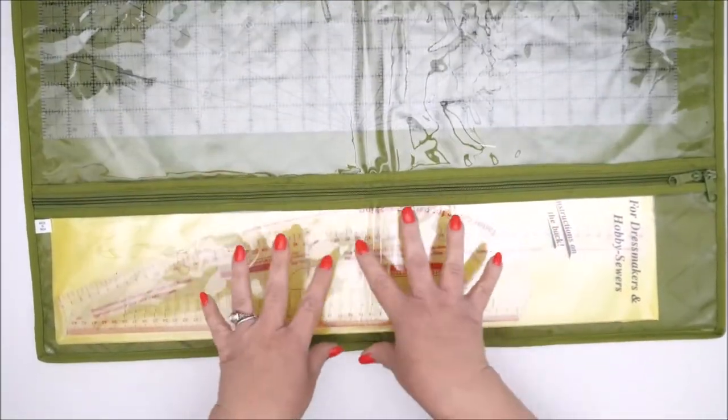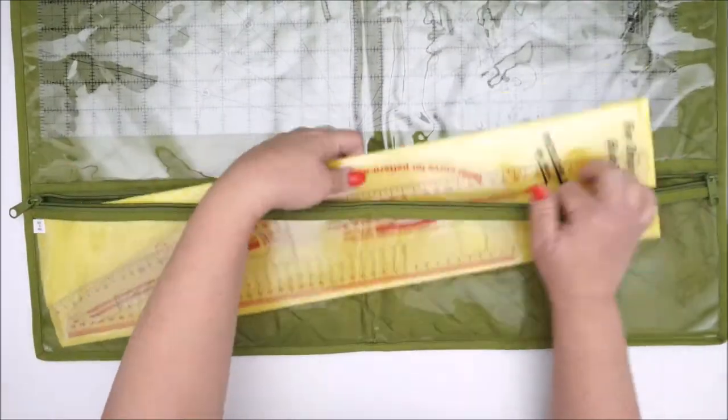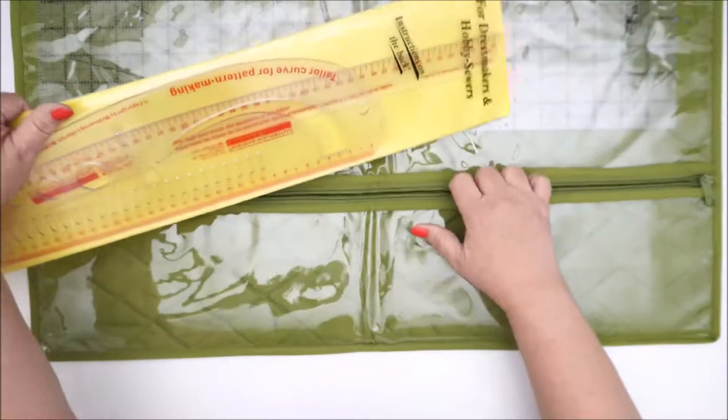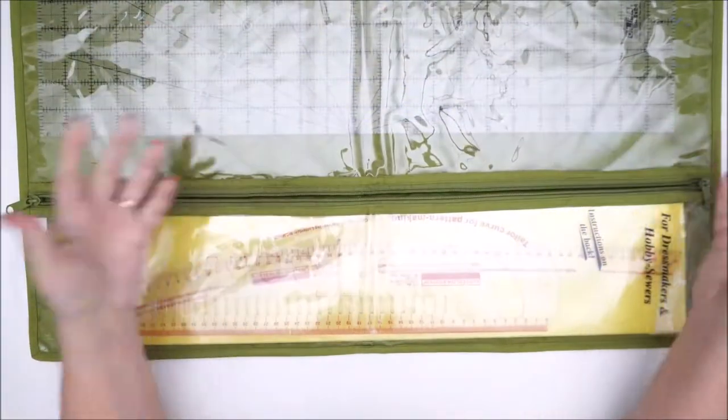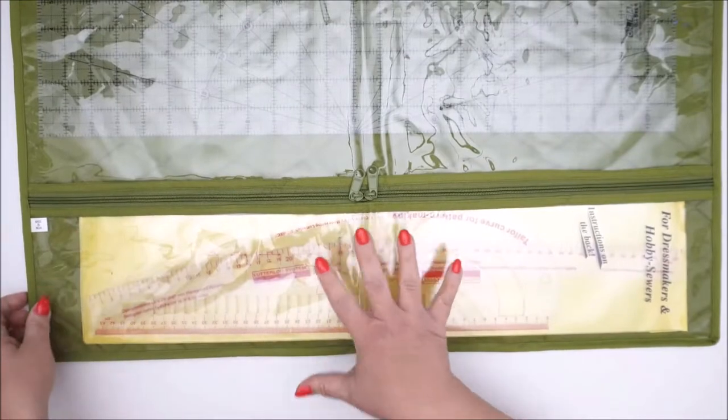And then there is a smaller zipper at the bottom that I'm going to keep my Golden Rule rulers inside here because it just looks like it's perfectly made for these rulers. It's fantastic. But again, there's plenty of space in here to have more rulers or templates.